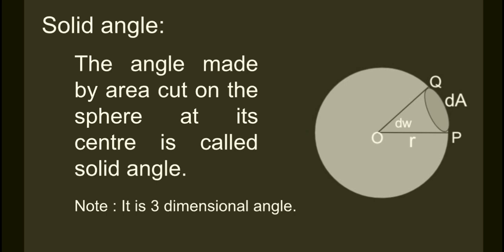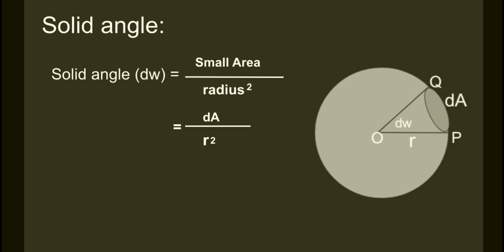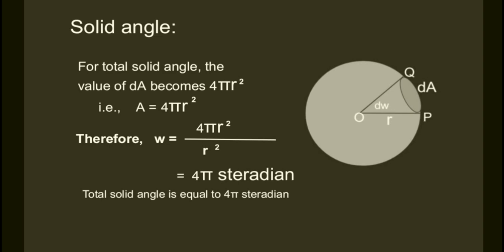That is the solid angle, and it is a three-dimensional angle. So for the total solid angle, let us do some calculation. Solid angle dω equals small area upon r squared (radius squared).